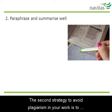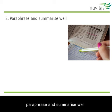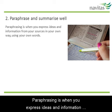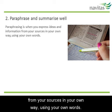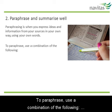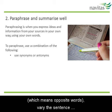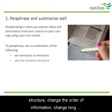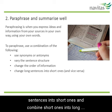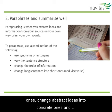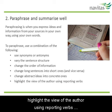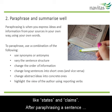The second strategy to avoid plagiarism in your work is to paraphrase and summarise well. Paraphrasing is when you express ideas and information from your sources in your own way, using your own words. To paraphrase, use a combination of the following: use synonyms, which means similar words, or antonyms, which means opposite words; vary the sentence structure; change the order of information; change long sentences into short ones and combine short ones into long ones; change abstract ideas into concrete ones; and highlight the view of the author using reporting verbs like 'states' and 'claims'.